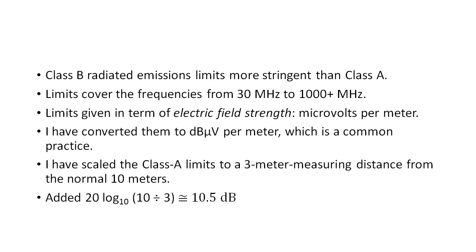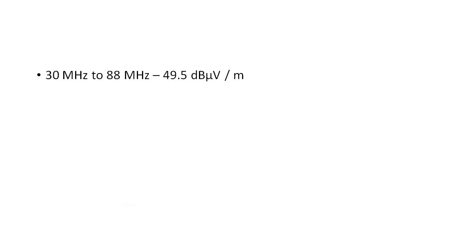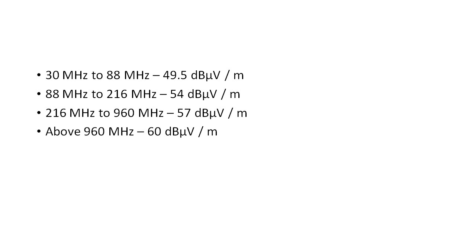This assumption, and therefore the conversion, only holds true in the far field of a radiated emission, which isn't typically the case below about 300 MHz, but for our purposes here it will be fine. So from 30 MHz to 88 MHz, the class A emission limit is 49.5 dB microvolts per meter. From 88 to 216, the limit is 54. From 216 to 960 MHz, the limit is 57 dB microvolts per meter. And above 960 MHz, the limit is 60.